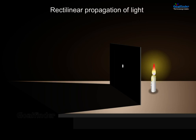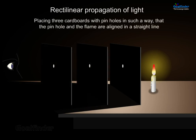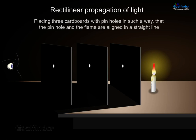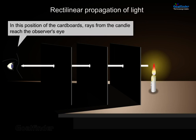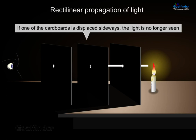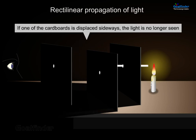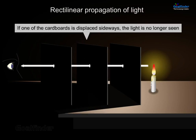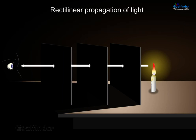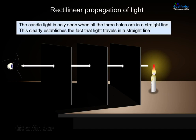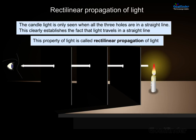Rectilinear propagation of light. Placing three cardboards with pinholes in such a way that the pinholes and the flame are aligned in a straight line, rays from the candle reach the observer's eye. If one of the cardboards is displaced sideways, the light is no longer seen. The candle light is only seen when all three holes are in a straight line. This clearly establishes the fact that light travels in a straight line. This property of light is called rectilinear propagation of light.